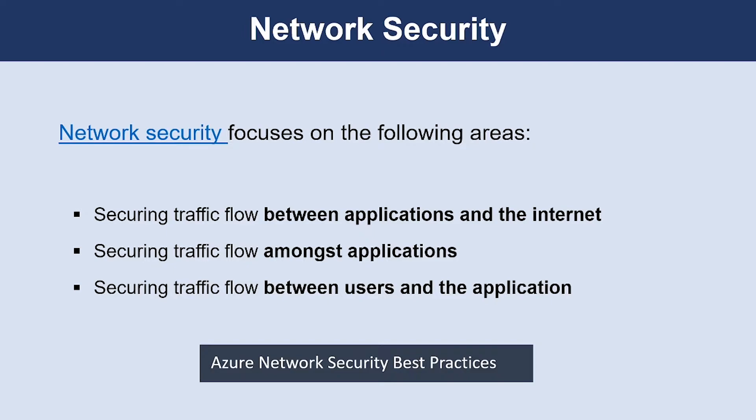Securing traffic flow between application and the internet focuses on limiting exposure outside your network. Network attacks will most frequently start outside of your network. So by limiting the internet exposure and securing the perimeter, the risk of being attacked can be reduced.